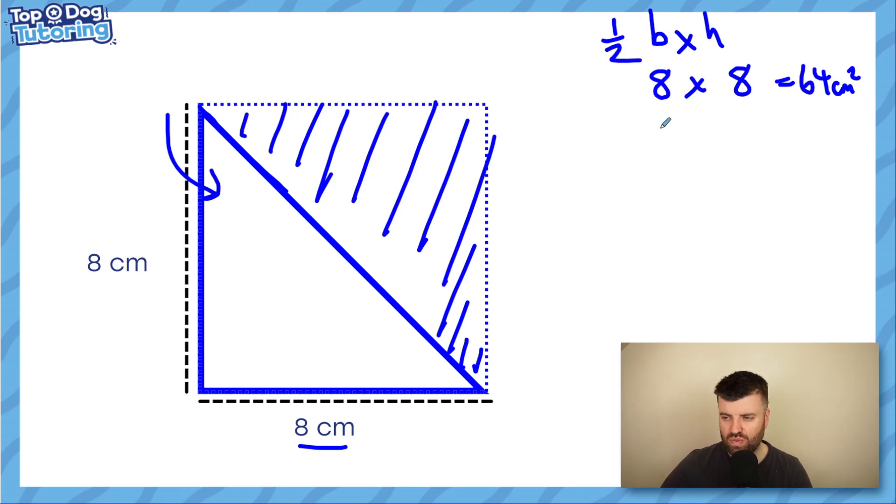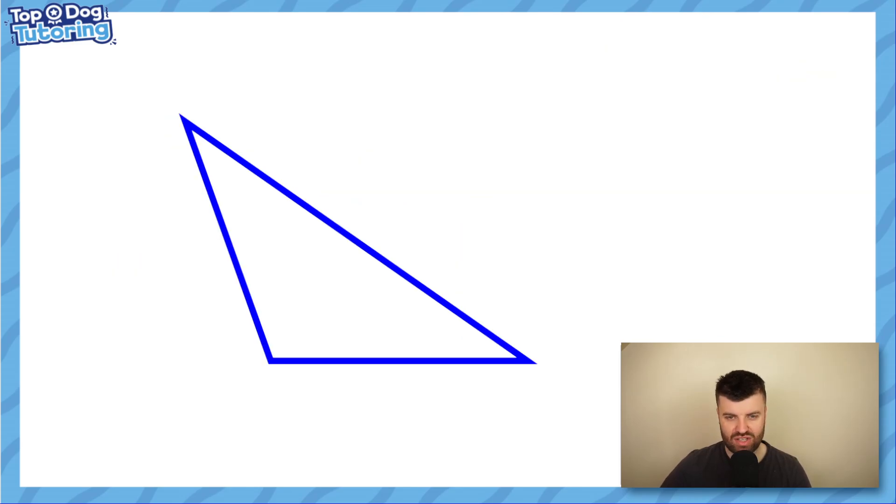So eight times eight is 64. We want half of that. So the area of this triangle is 32 centimeters squared. We use the formula half base times height.